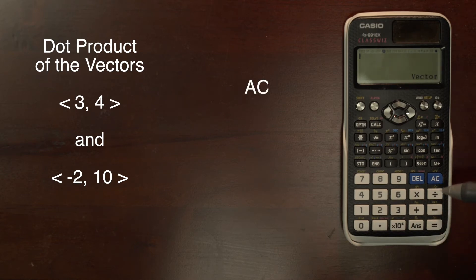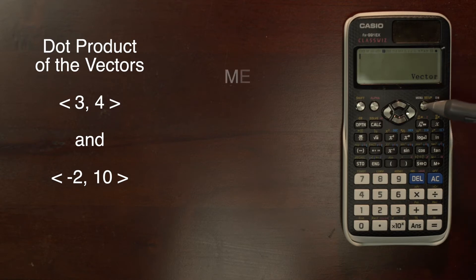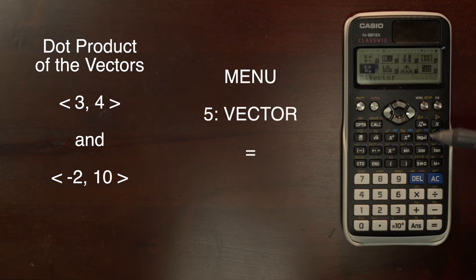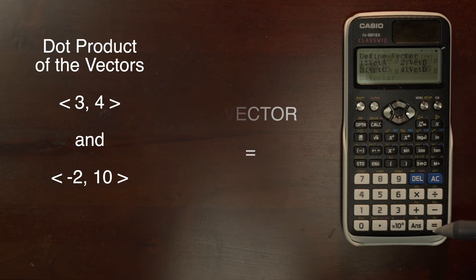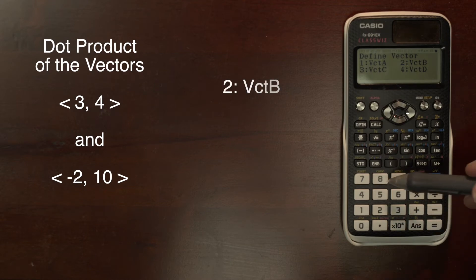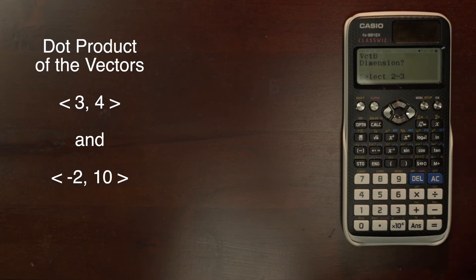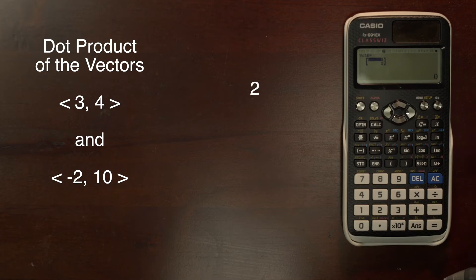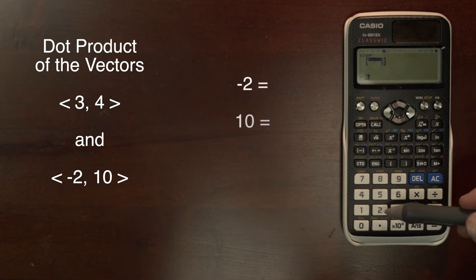We clear the screen and go back up to the menu. We are already on vector so we can hit equal. Now we can select vector B, which is 2, and it is 2-dimensional. Enter in negative 2 and 10.